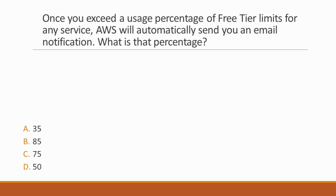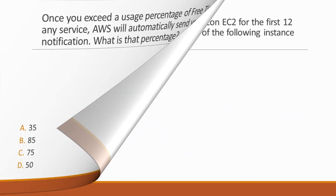Next question: Once you exceed a usage percentage of free tier limits for any service, AWS will automatically send you an email notification. What is that percentage? If you exceed 85% of free tier usage, AWS will automatically send you an email to notify you, to help with staying within the free tier limits, otherwise you may incur charges.